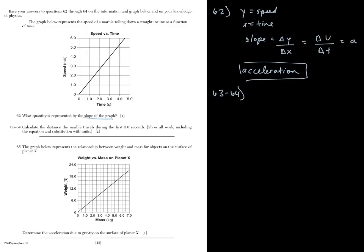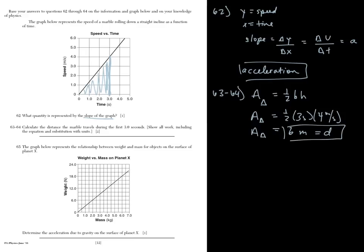63 to 64, this is a reference table equation. Calculate the distance the marble travels during the first three seconds. You can do it one of two ways. You can use it by calculating the area under the curve. So this is a valid equation, one-half base times height. Our base here is three seconds, and our height is four meters per second. One-half times 12 is six meters, which equals the distance. This is another way you could solve it. The only other way you could solve it is that you have to solve for the acceleration yourself, but this is the quickest way to solve it by finding the area under the curve.